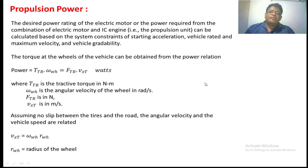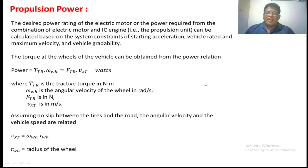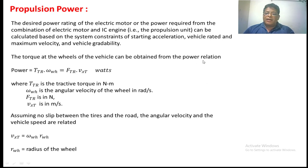Before finding the propulsion power, designers take some constraints into consideration: how much acceleration is required at the time of starting, the vehicle grade, maximum velocity, and vehicle gradability — all these parameters govern how much power is given by the motor. The torque at a wheel can be obtained from the power relation: Power equals Ctr dot omega_wh, where omega_wh is the angular velocity of the wheel and Ctr is the torque at the wheel.